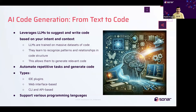AI code generation leverages large language models to suggest and write code based on your intent and context. Large language models trained on vast datasets of code recognize patterns and relationships in code structure to generate relevant code and automate repetitive tasks. There are four ways in which you can leverage large language models for code generation. Number one, you can use the IDE-based AI coding assistance, such as GitHub Copilot and Tab9. These offer seamless integration with your existing development environment in the IDEs, providing suggestions and code completions directly in your editor for an uninterrupted workflow.